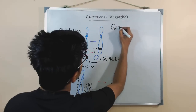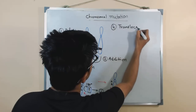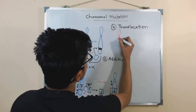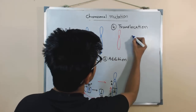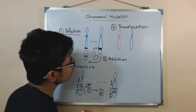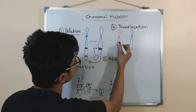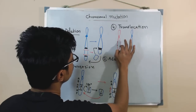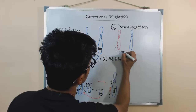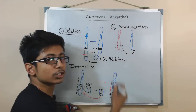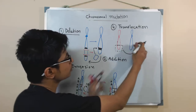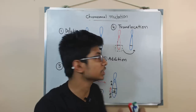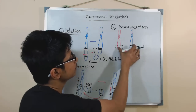The last type is called chromosomal translocation. Translocation involves two different sets of chromosomes — one chromosome and a non-homologous chromosome. A segment from one particular chromosome is cut and inserted into the non-homologous chromosome, and vice versa. Both chromosomes undergo cuts and swap segments with each other. 'Trans' means transfer and 'location' refers to the changing of position between those two chromosomes.